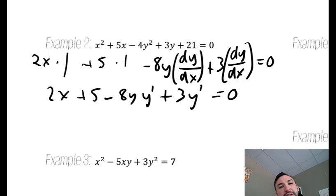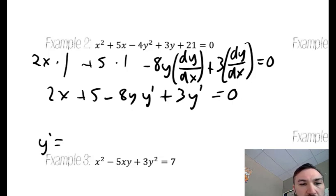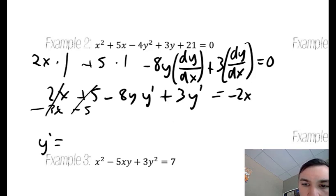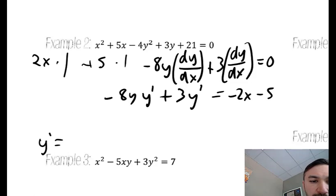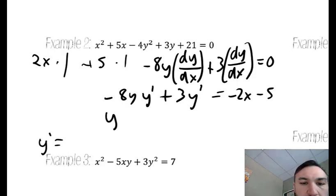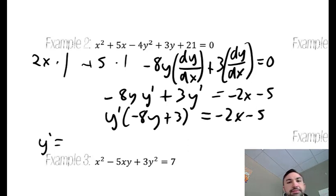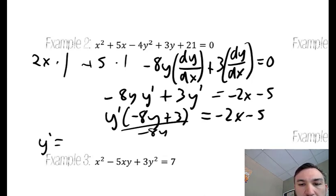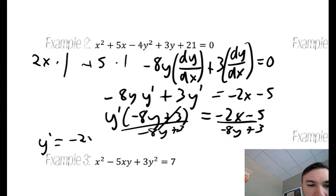The whole purpose of this is I'm trying to solve for the derivative — trying to figure out what y prime equals. So I could subtract the 2x and the 5 over. Both of these have a y prime, so I could factor that GCF out. And then finally, if what I'm solving for is being multiplied by all of this, I can divide both sides. So in the end, the derivative is negative 2x minus 5 over negative 8y plus 3.